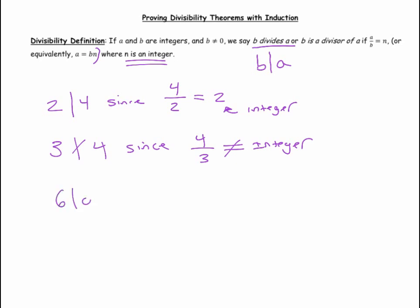A couple things to note is that 6 divides 0, and that's because 0 over 6 is just equal to 0, and that's an integer.